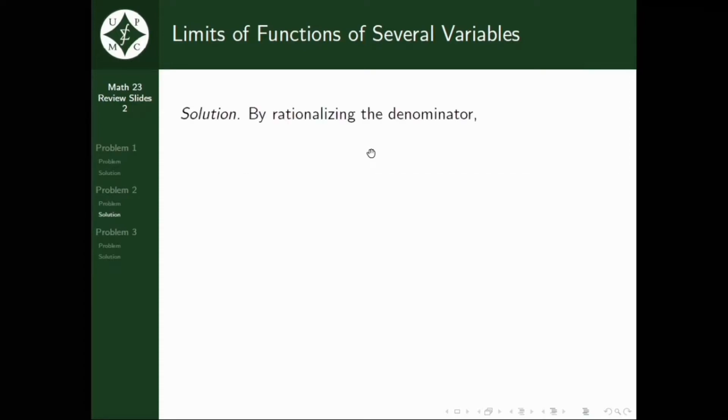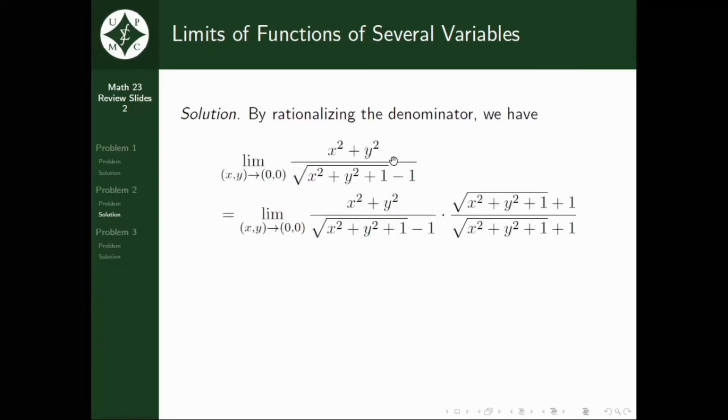By rationalizing the denominator, we have, yan, this expression. So, ang ginawa natin is nag-multiply tayo ng conjugate. So, we multiplied yung expression na kinukuan na natin ng limit by square root of X squared plus Y squared plus 1 plus 1 all over square root of X squared plus Y squared plus 1 plus 1. So, simplifying that one, we now have this thing.